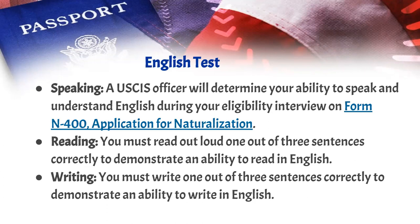The next part is reading. You must read aloud one out of three sentences correctly to demonstrate an ability to read in English. They will point to a sentence and say, please read number one. If you get it correct, you're finished. If you miss maybe a word or two, they will ask you to read number two. You just need to read one out of three sentences correctly.